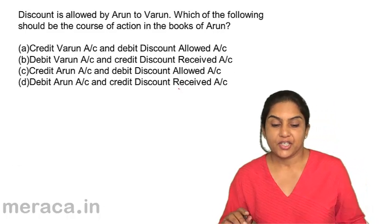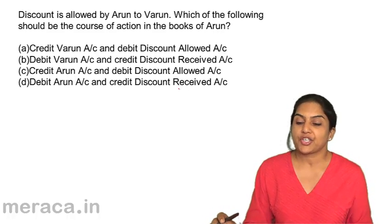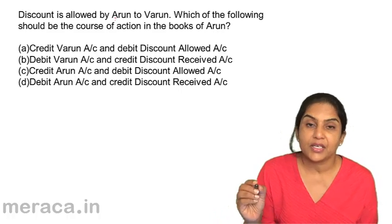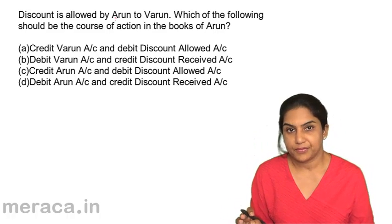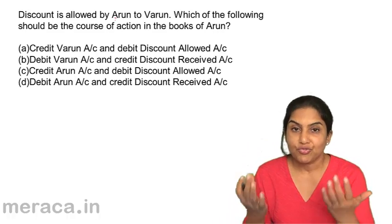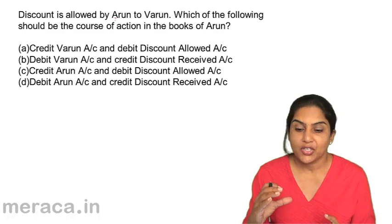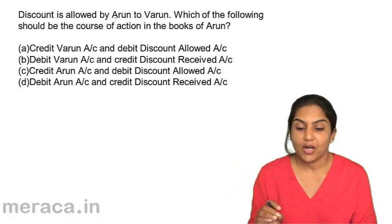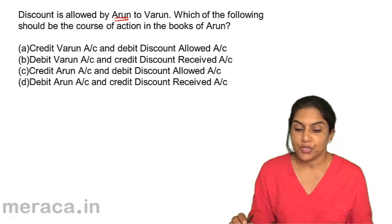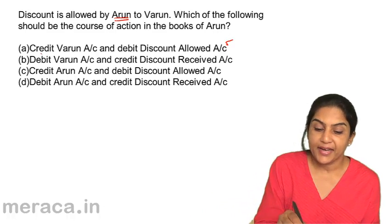One more transaction. Discount is allowed by Arun to Varun. Which of the following should be the course of action in the books of Arun? Arun is allowing the discount, therefore it is a loss or expense for Arun. Arun has to receive payment but will receive something less, so it's a loss for him. Discount allowed must be debited in the books of Arun.